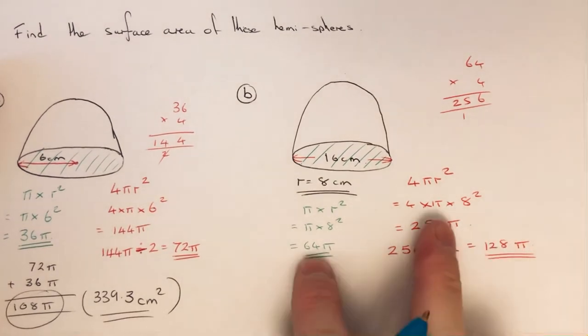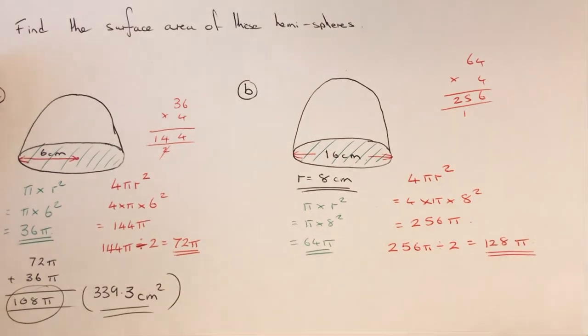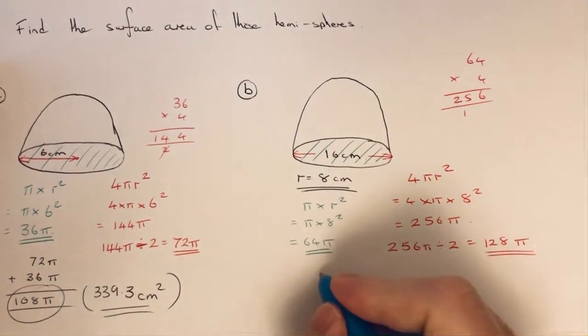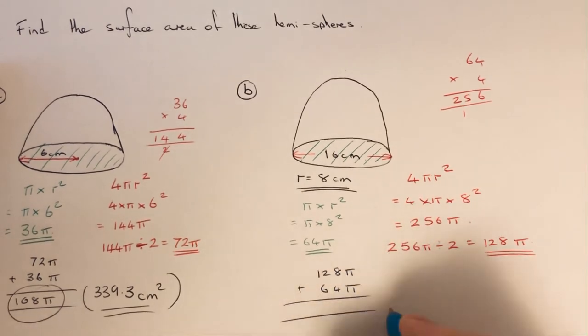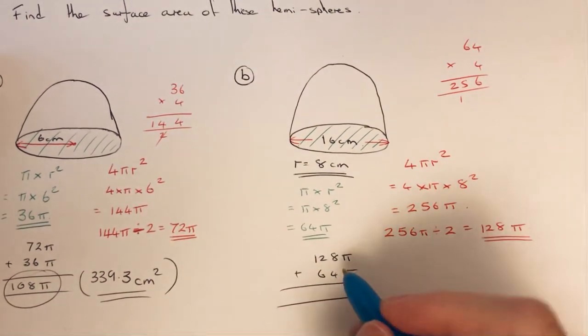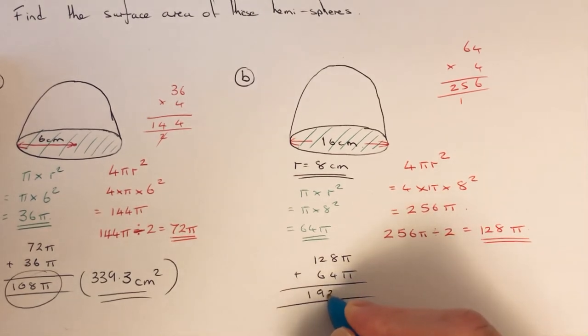So those two numbers are the areas of the two surfaces, so we just need to add these together. So we go 128π, add 64π. So that gives us 192π.